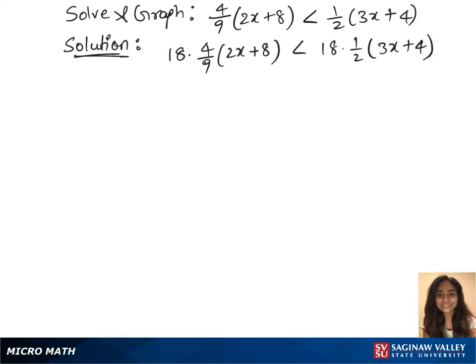In our next step, we have 8 times 2x plus 8 less than 9 times 3x plus 4. Now use the distributive rule.